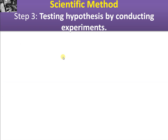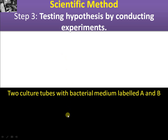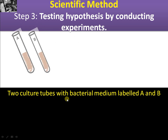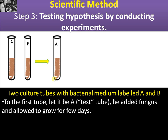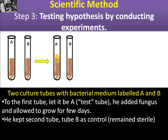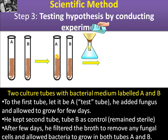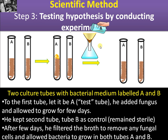Step 3 is testing the hypothesis by conducting experiments. In Fleming's simplified experiment, two culture tubes with bacterial medium were labeled A and B. In tube A, he inoculated Penicillium fungus and allowed it to grow for a few days, while tube B was kept as a control and remained sterile. After a few days, he filtered the contents of tube A to remove any fungal cells, then allowed bacteria to grow in both test tubes.